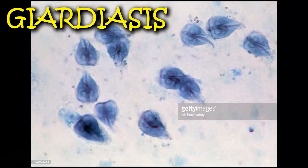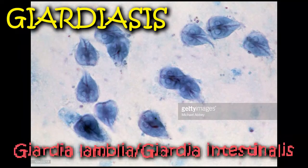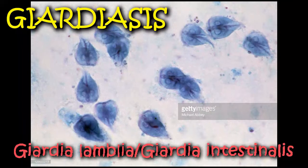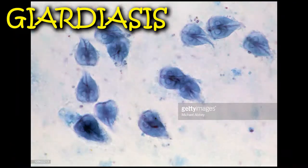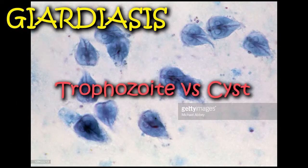Giardiasis is caused by Giardia lamblia, or Giardia intestinalis, which is the only pathogenic intestinal flagellate known to infect humans. It has two morphological forms, namely trophozoite and cyst.